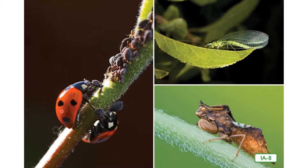Who knows what this insect is called? That's right, it's a ladybug. Did you know that ladybugs are some of the most helpful insects on Earth? They feed on aphids and the eggs of moths and beetles that destroy crops. Lacewings and ambush bugs also eat aphids, so farmers are happy when they see these insects on their plants.